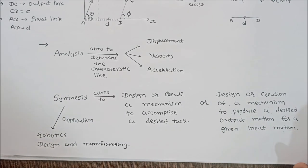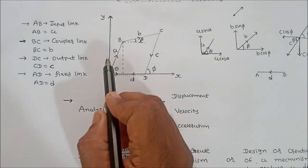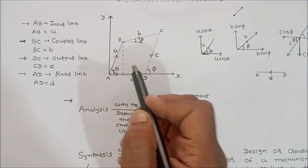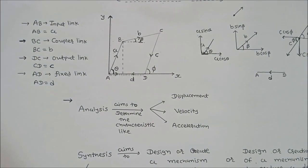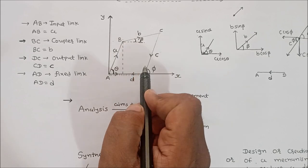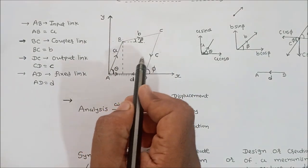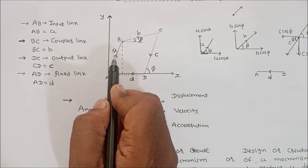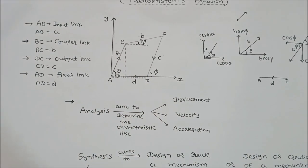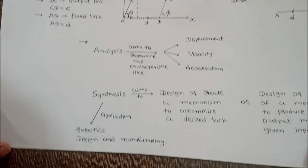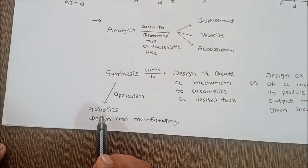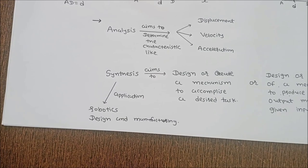In synthesis, the length values of links A, B, C, and D can be determined, because synthesis of mechanism means design or creation of a mechanism to produce a desired output motion for a given input motion. The application of synthesis of mechanism is in robotics, where we require desired output motion for a given input motion.